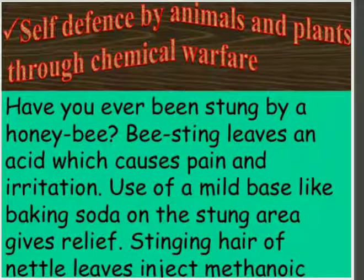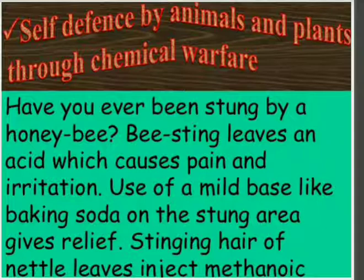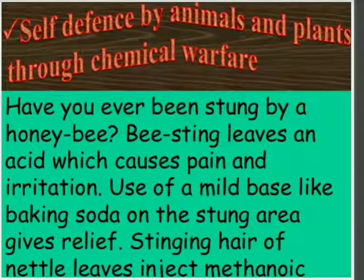Nettle plants — you must have observed in your NCERT that the leaves have needle-like structures and they inject methanoic acid, or formic acid, inside the body. But nature has given a remedy just nearby — we have the dock plant near the nettle plant, which is basic in nature. If we rub the leaves of the dock plant on the stung area, we get relief. So honey bees, ants, and nettle leaves all contain methanoic acid or formic acid, which is injected inside our body and causes pain and irritation.